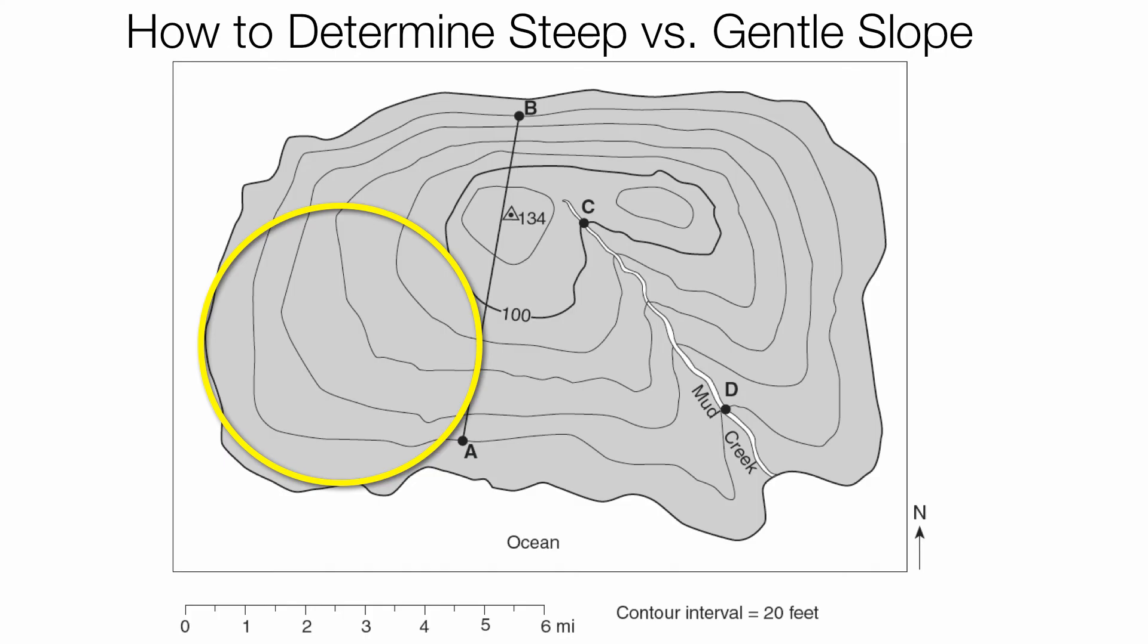So that's really as easy as it is in terms of differences between steep versus gentle slope. It's all about the spacing of your lines. One other feature on this map I just want to point out to you is the value 134 with that little triangle with the dot. That's what we call a benchmark.